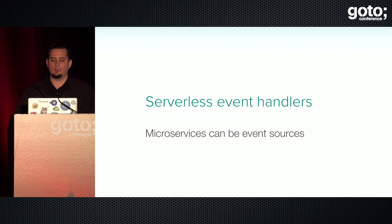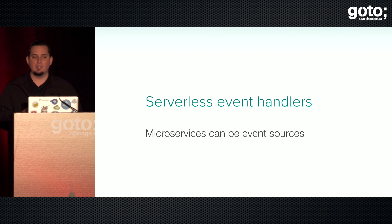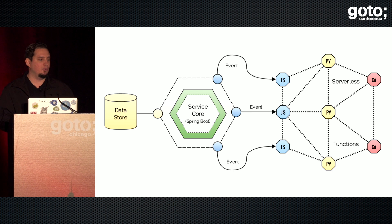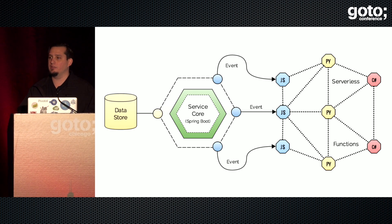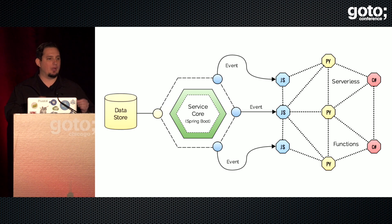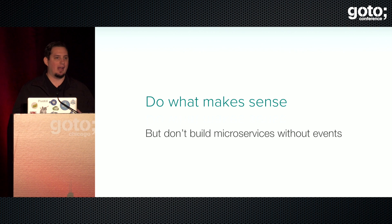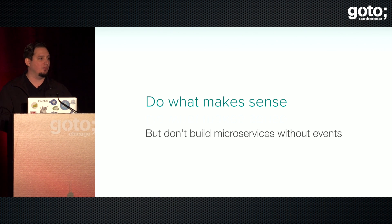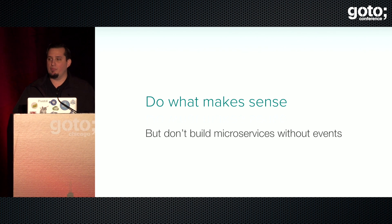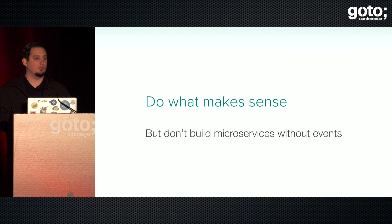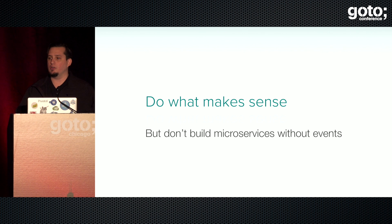You can also add event handlers as serverless functions. AWS has a service called Step Functions that does this. It's also possible to create a Spring Boot microservice that serves as an event source, feeding events into a serverless application, and you can create serverless event handlers around your microservice that allow you to do things like change state. My final advice: do what makes sense, but don't build microservices without events. If you have to refactor all your microservices later to start using events, it's going to be very hard.